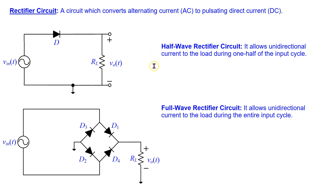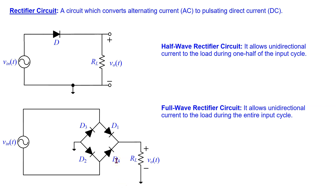There are two main types of rectifier circuits. A half-wave rectifier allows unidirectional current to flow through the load during one half of the input cycle, and is constructed by connecting a diode in series with a load resistor. The sinusoidal source is the input and the output voltage is measured across the load resistor. A full-wave rectifier allows unidirectional current to the load during the entire input cycle. A popular construction is the bridge rectifier, which uses four diodes arranged in a bridge configuration, with the output voltage measured across the load resistor RL.